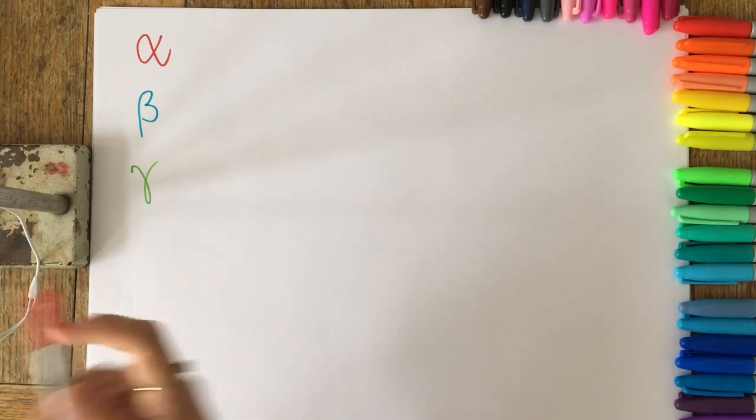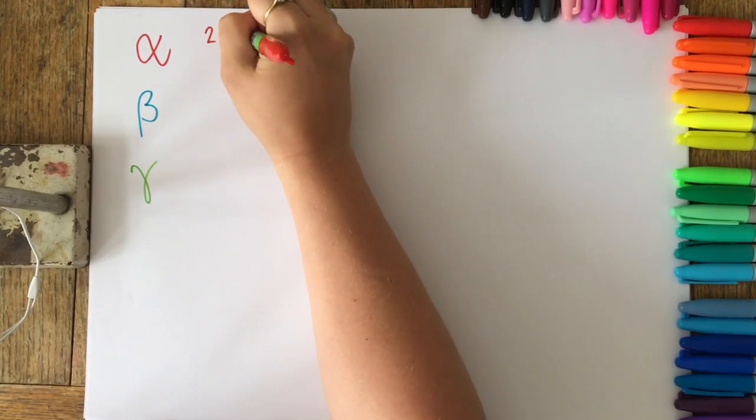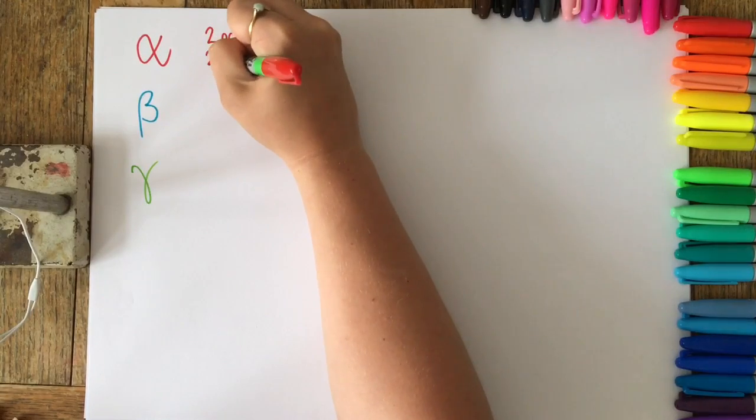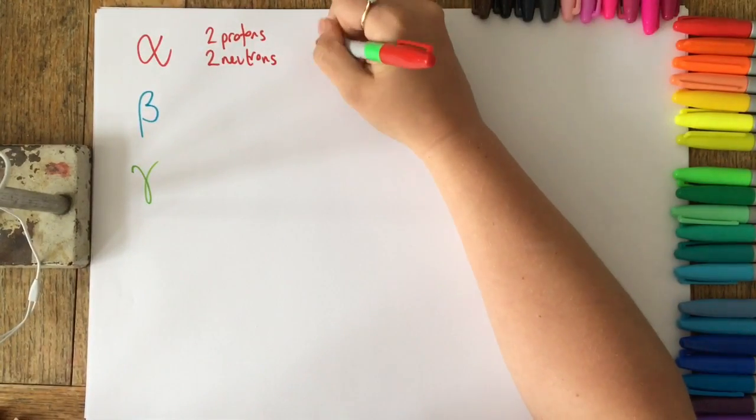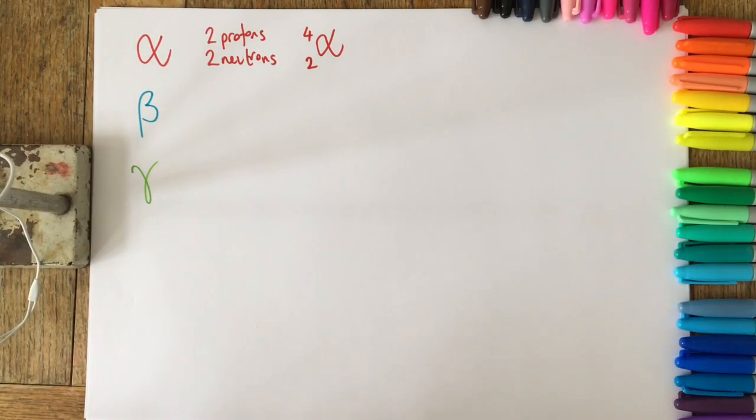An alpha particle is made up of two protons and two neutrons. It's basically the same as a helium nucleus. We write it using the Greek letter alpha, and the four at the top refers to the mass, and the two at the bottom refers to the proton number.